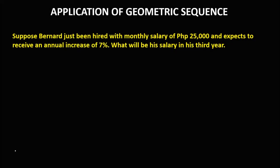Let's discuss the application of geometric sequences. Suppose Bernard has been hired with a monthly salary of 25,000 pesos and expects to receive an annual increase of 7%. We want to find his salary in his third year. Since the monthly salary or starting pay is 25,000 pesos, therefore a sub 1 is equal to 25,000.